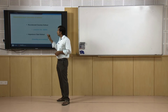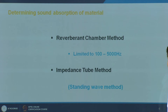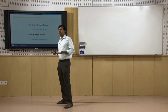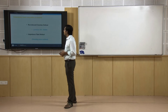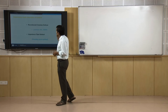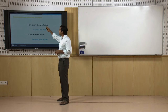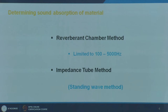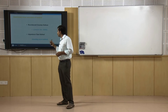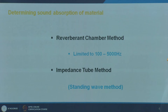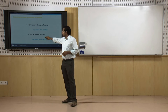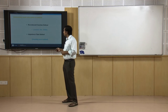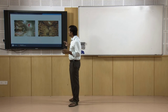This reverberant chamber method is most efficient for frequencies between 100 to 5000 Hz. There are other considerations like the mounting surface and edge diffraction, but we won't go into those specifications now. The second method is called the impedance tube method, which applies the principle of standing waves. I will quickly show you the chambers and the testing devices.